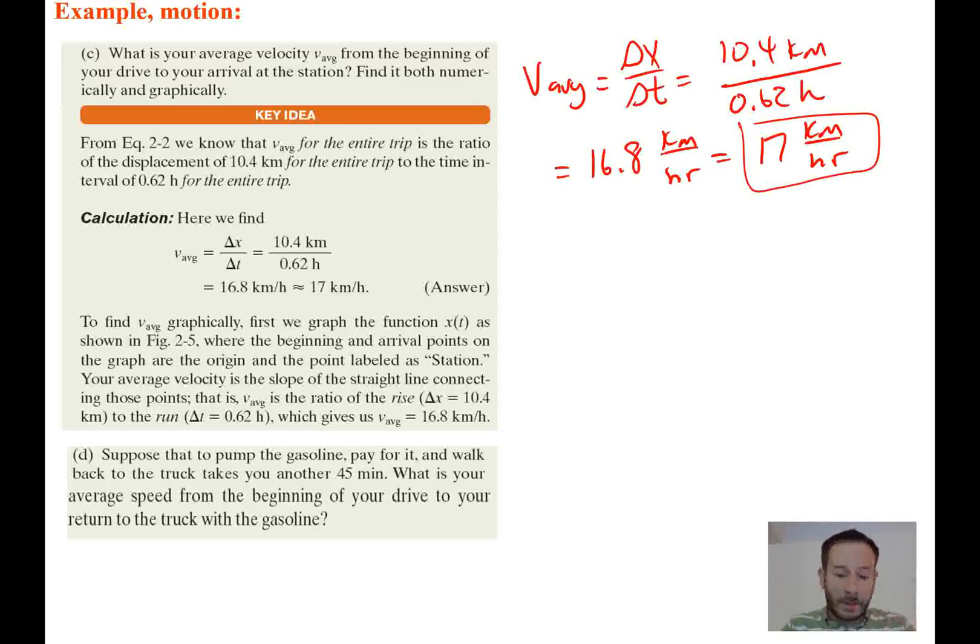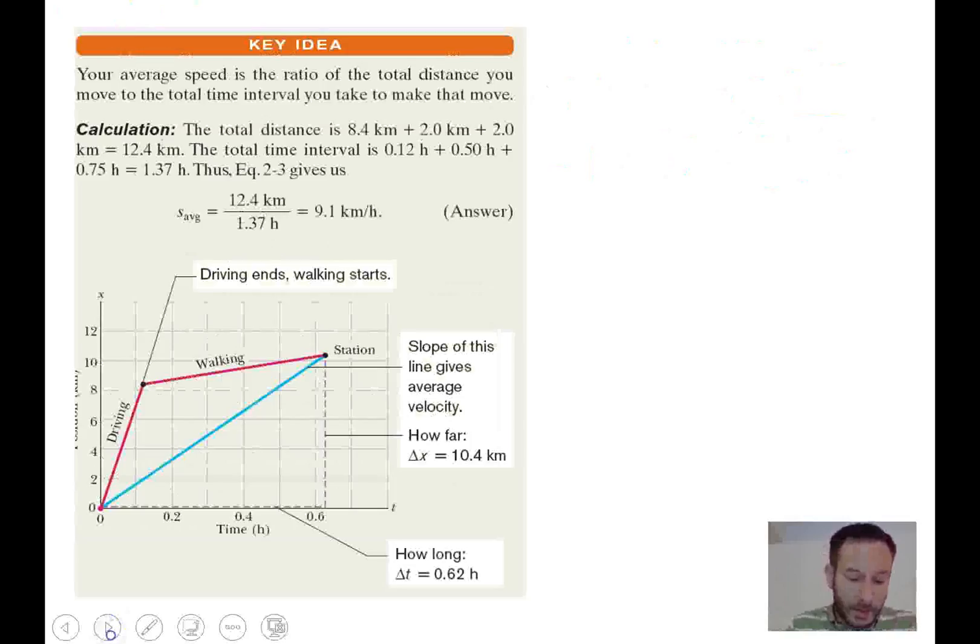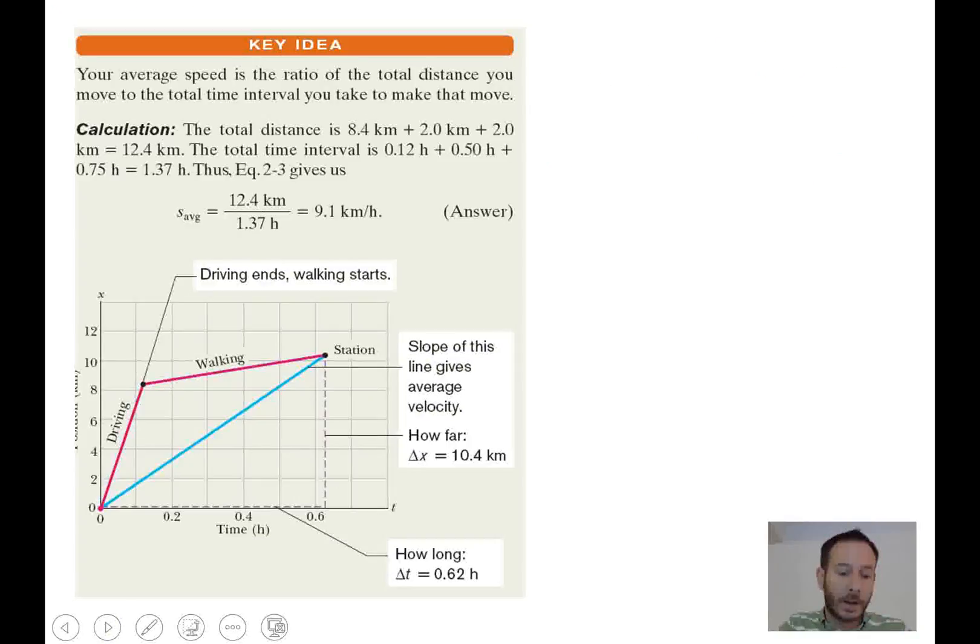Now it also asks us to do this graphically. So if we go ahead and flip to the next slide, you can see the graph that they created. So the pink line, which is here on the left, is going to be a representative of when she's driving. So we know if we look at our time, it only took about 0.12 hours to get there. And she went a total of 8.4 kilometers. So there's our first point.